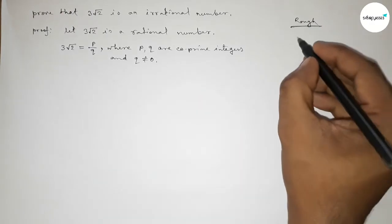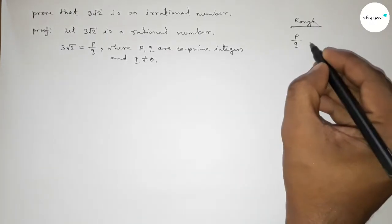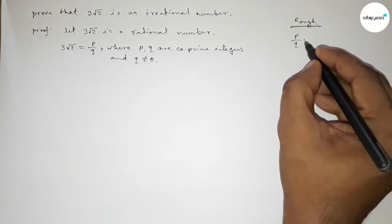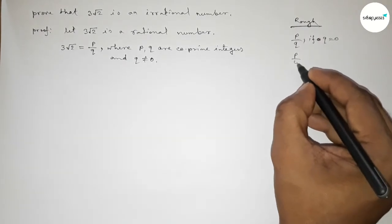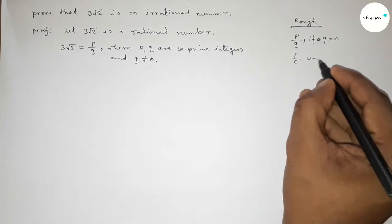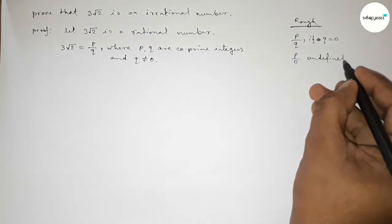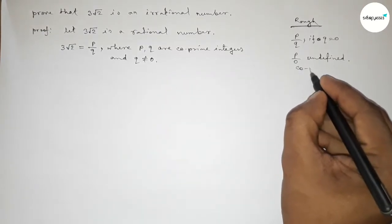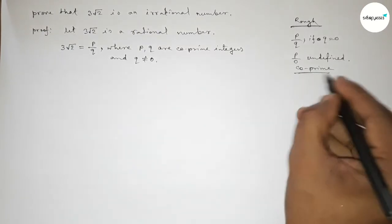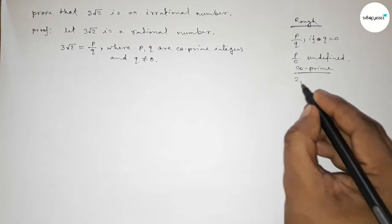Now, discussing here some calculation. If you take p by q and here q equal to zero, then p by zero, so this is undefined. So we cannot take q equal to zero.